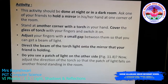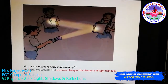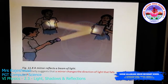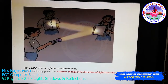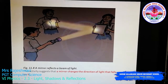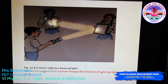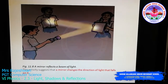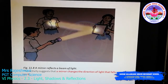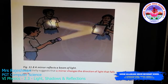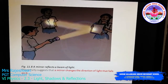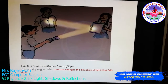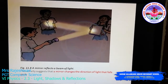If you adjust the direction of the torch, the patch of light will fall on other friends standing in the room. This patch of light on the mirror will fall on the friend standing opposite the mirror. This activity concludes that a mirror reflects a beam of light and changes the direction of light that falls on it.